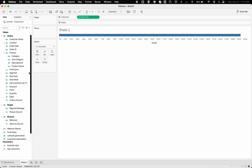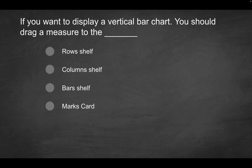What about the bar shelf? That's really just a distractor. There is no such thing as a bar shelf. You have the pages card or shelf over here, you have the filters pane or really the filters card, the marks card, which is the last option here by the way, but there's no bars shelf.